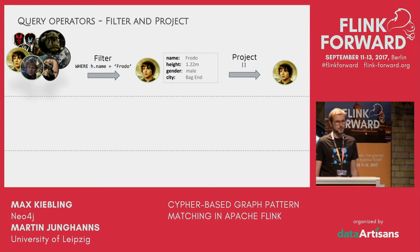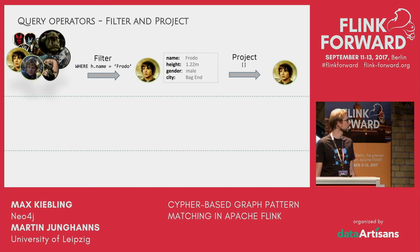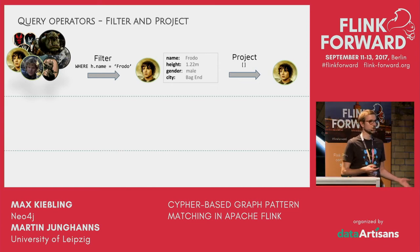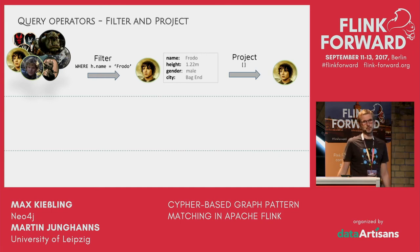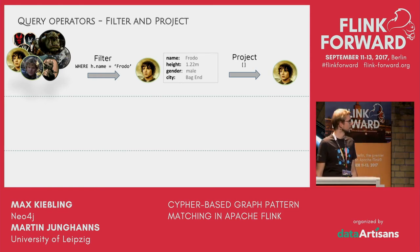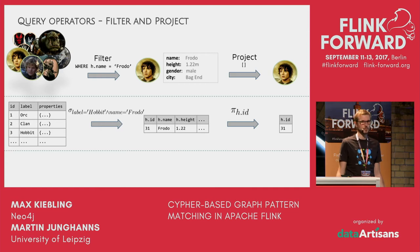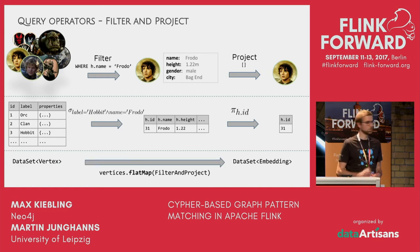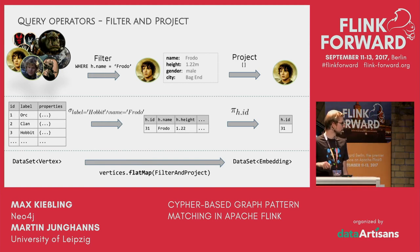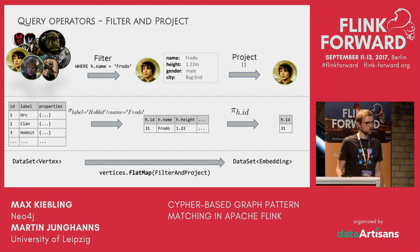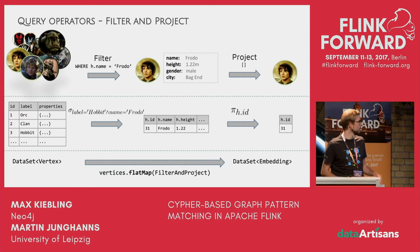With this in place, we can introduce our query operators. We have three layers: the logical view, the relational algebra view, and the Flink operations. Leaf operators take the datasets containing our graph data — vertices and edges — into initial embeddings. For instance, to find all vertices that are a hobbit named Frodo, we look at all vertices, filter those with label hobbit and name Frodo, then add a projection to keep only the properties needed later — reducing intermediate result size.